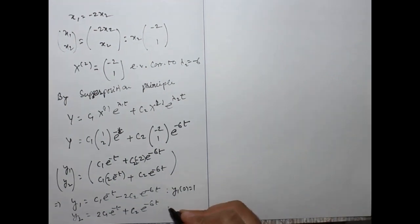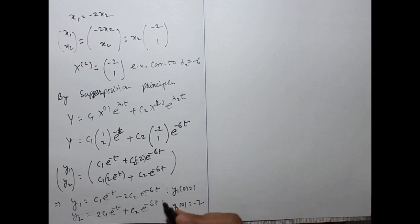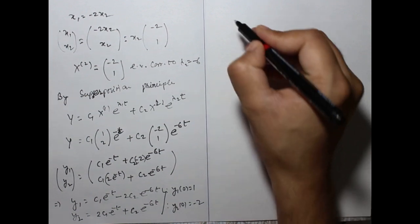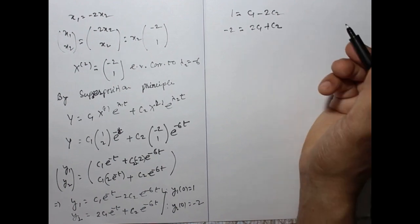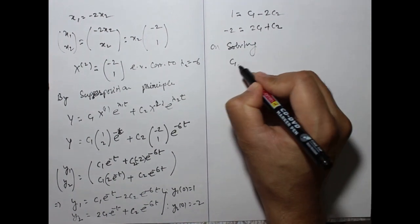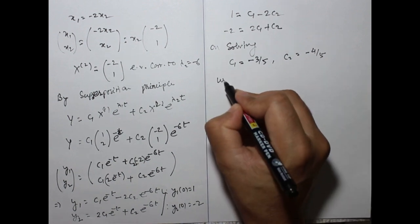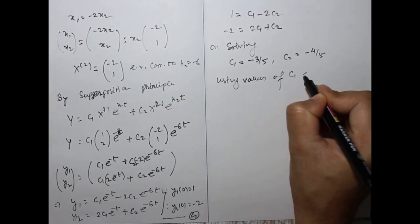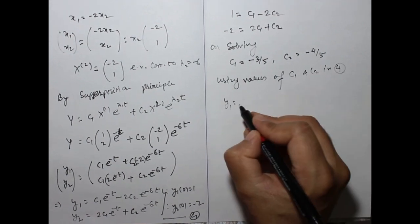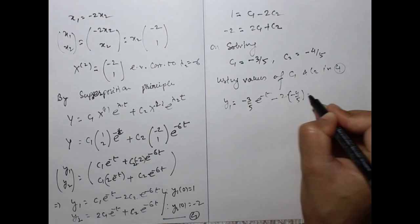The initial conditions are y1(0) = 1 and y2(0) = −2. Imposing these on the general solution: c1 − 2c2 = 1 and 2c1 + c2 = −2. Solving these equations gives c1 = −3/5 and c2 = −4/5.